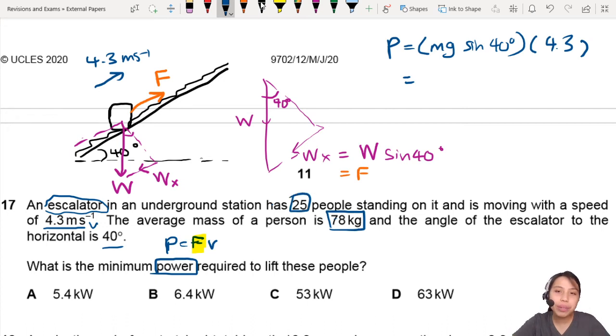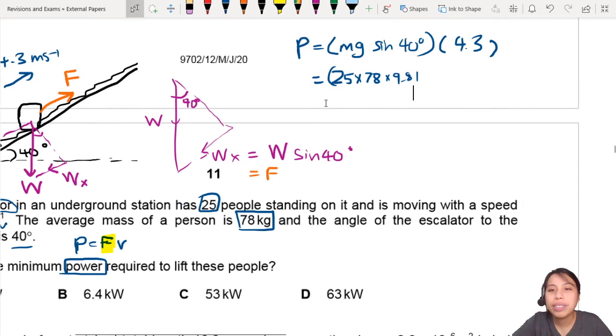You have 78 kg. You have 25 people. So, you need to multiply everyone. 25 people, about 78 kg each, times 9.81. This is going to need some more space here. Sine 40, times 4.3. That is very long.